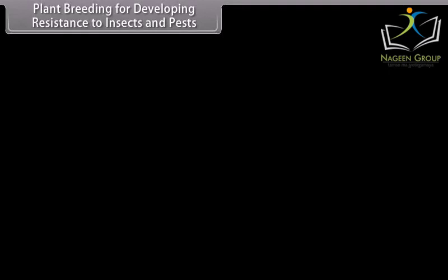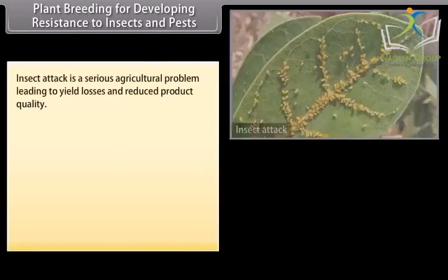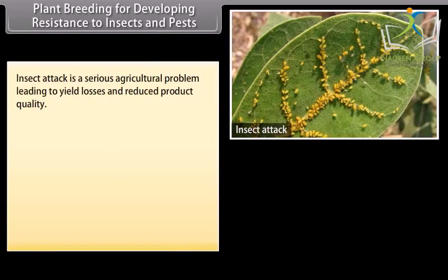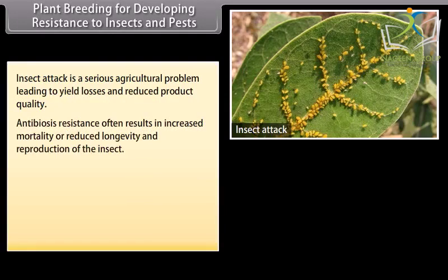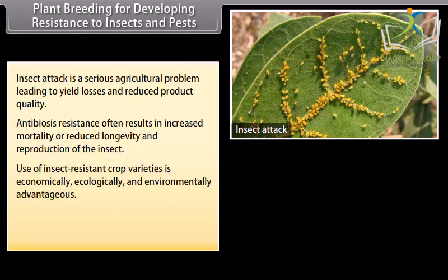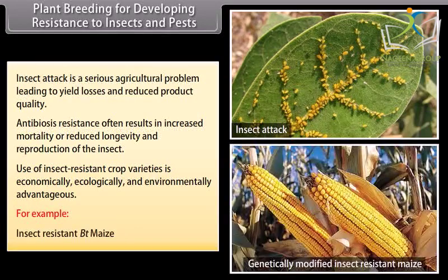Plant breeding for developing resistance to insects and pests addresses a serious agricultural problem of yield losses and reduced product quality. Antibiosis resistance often results in increased mortality or reduced longevity and reproduction of insects. Use of insect-resistant crop varieties is economically, ecologically, and environmentally advantageous. For example, insect-resistant Bt maize.